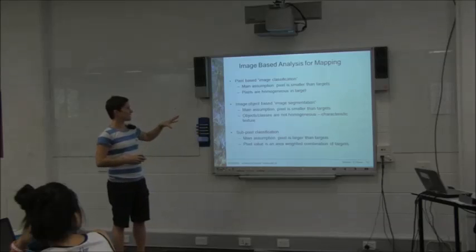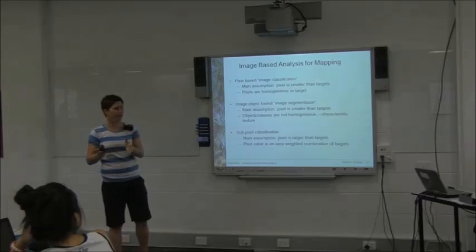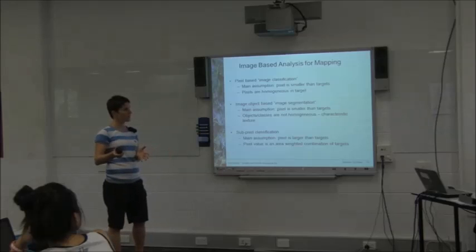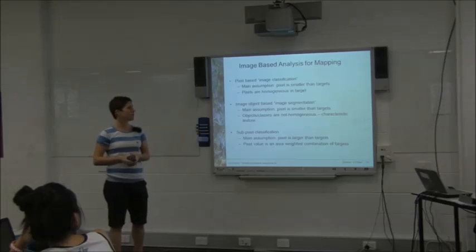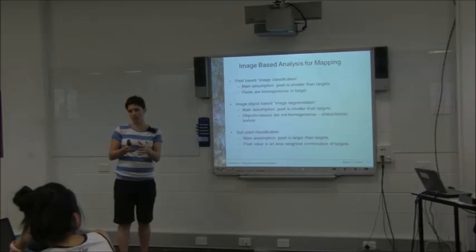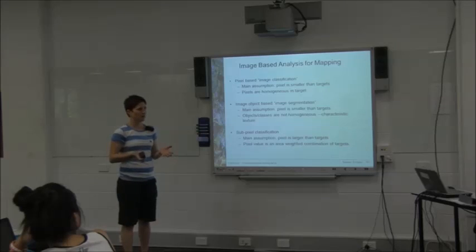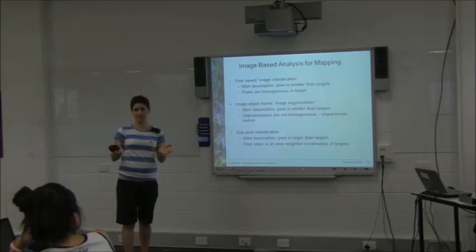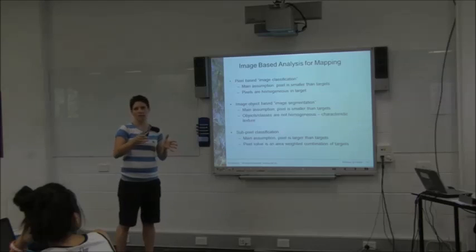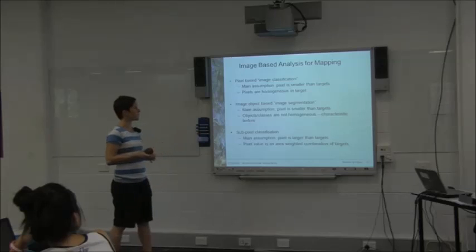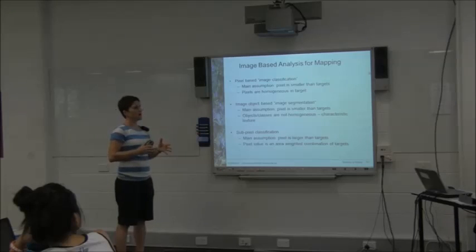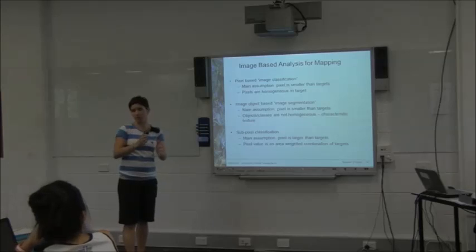For hard boundary mapping, pixel-based classification is what we've done in practicals the past couple of weeks, covering unsupervised and supervised classifications. The assumption here is that the pixels in the image are smaller than the features in the environment we're trying to map. With a Landsat image, for example, the pixel size is 30 metres, so we're not trying to map individual trees — only features much larger than that pixel size. We also assume that whatever is in each pixel is homogenous.